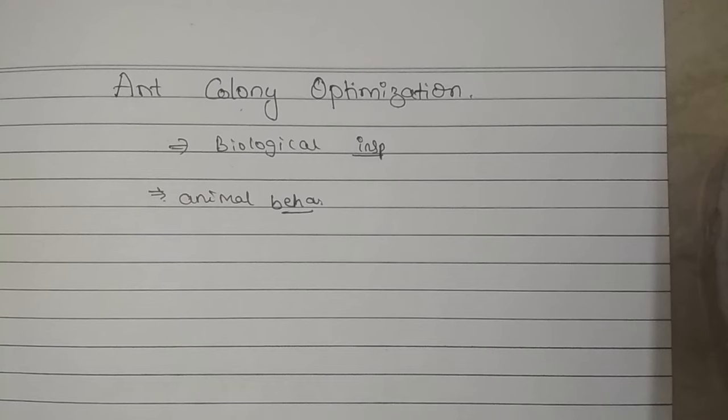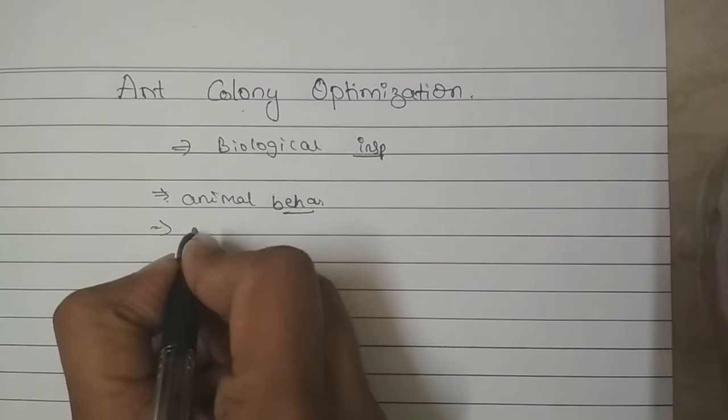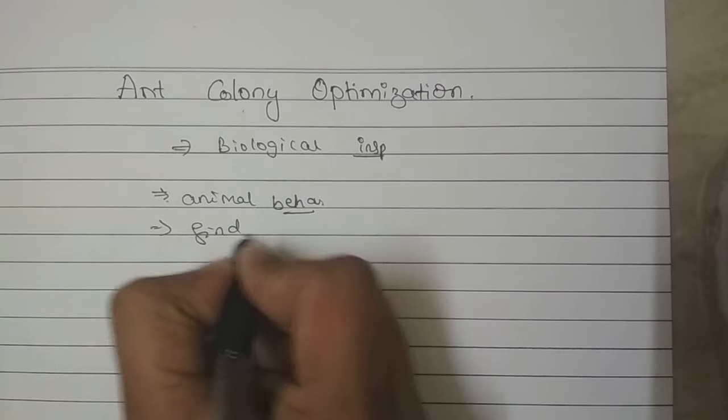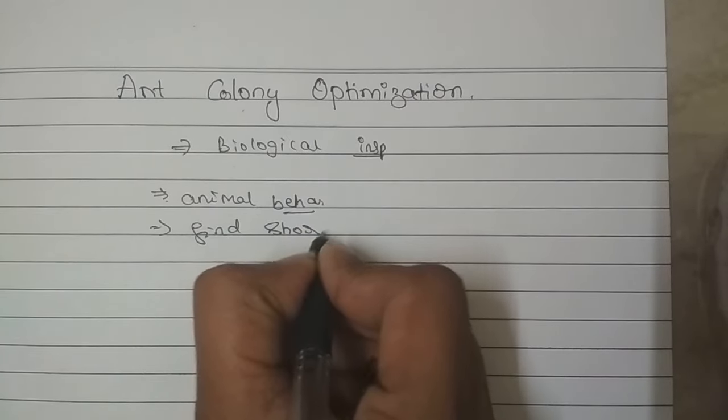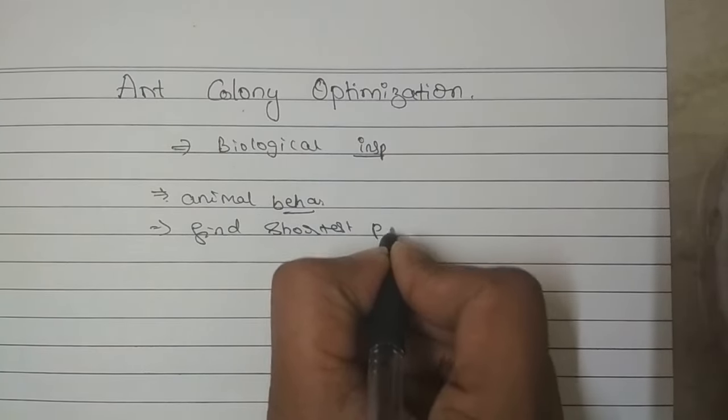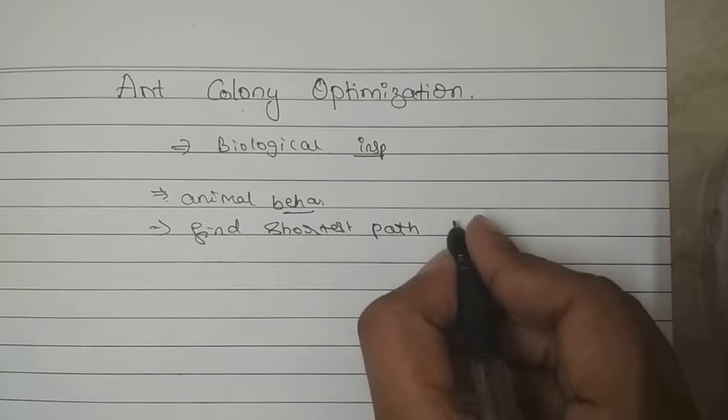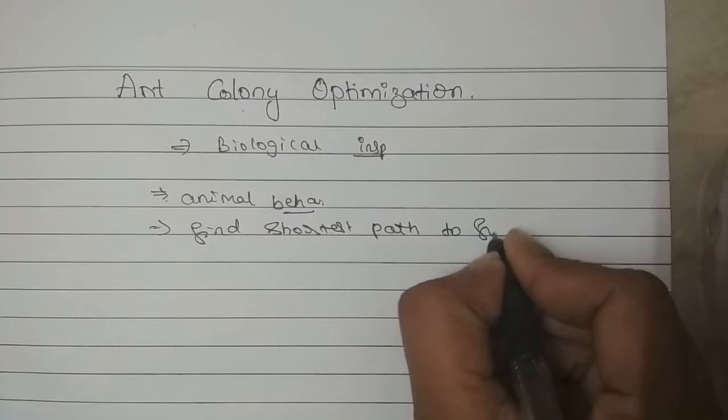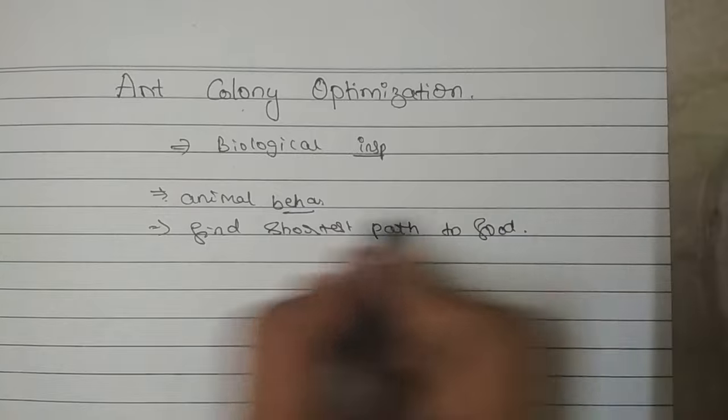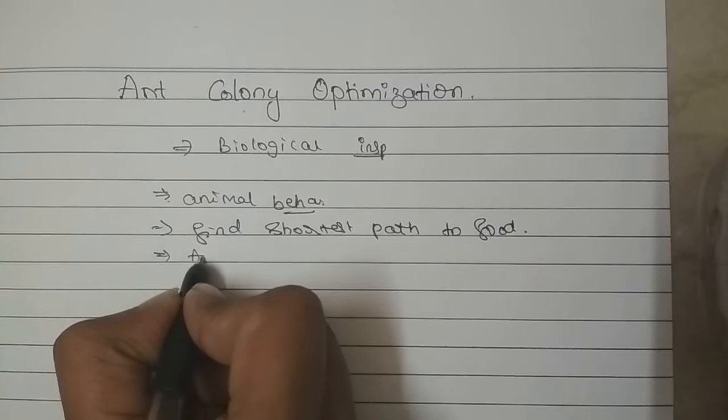So the reason for ant colony optimization biological inspiration is because of the animal behavior. It's inspired by animal behavior. So when it comes to ants, ants will find the shortest path to food. So what it will do, ant will deposit pheromone.